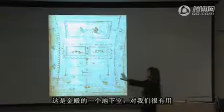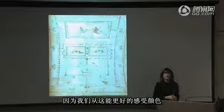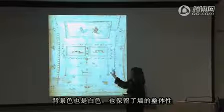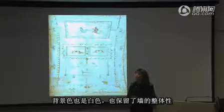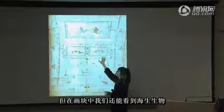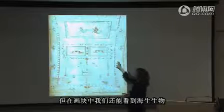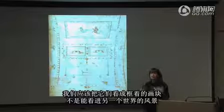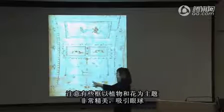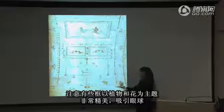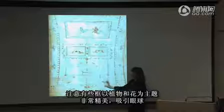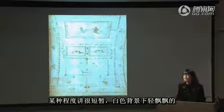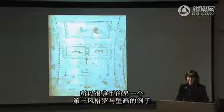This is a vault in the Domus Aurea, useful because here we can get a better sense of the color. Once again the background is white and the integrity of the wall has been respected. The artist has divided the wall into a series of panels, and within those panels we see sea creatures floating in the center of those framed panels — we are meant to read them as framed panels, not as views into some other world. Note also that some of the frames are done with vegetal and floral motifs, very delicate, very attractive, very ephemeral and lightweight against that white background. Very much another example of third style Roman wall painting.